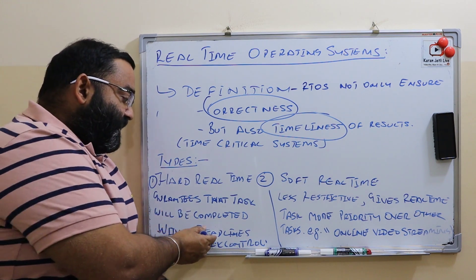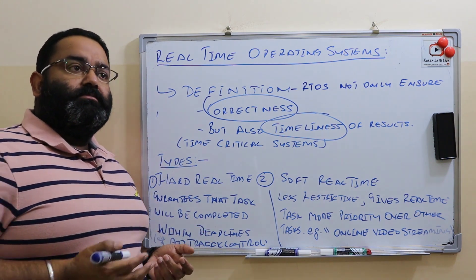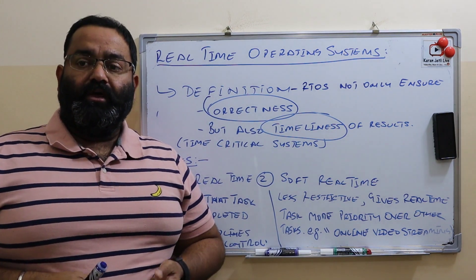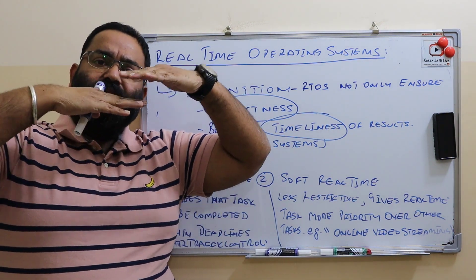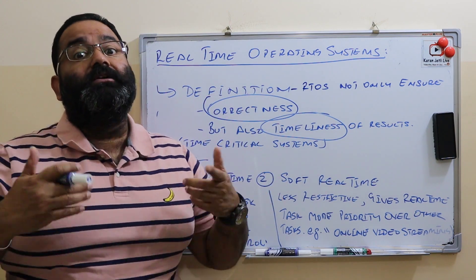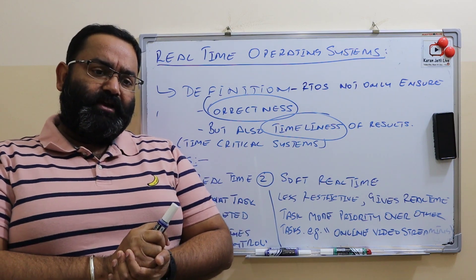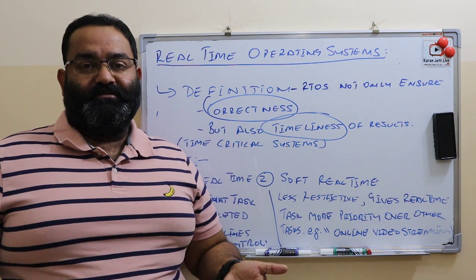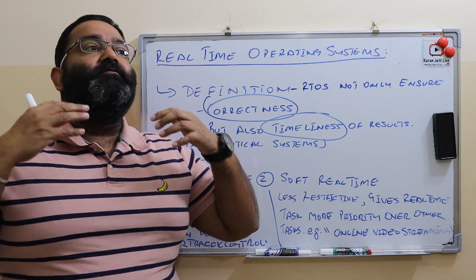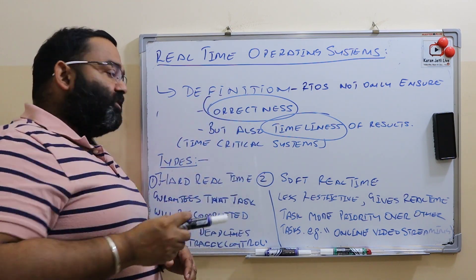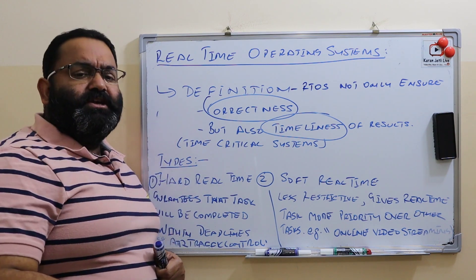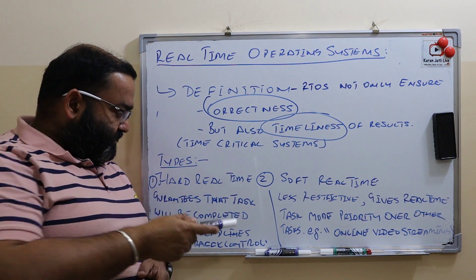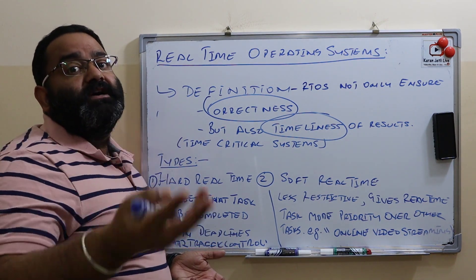An example of a hard real-time system is air traffic control. In air traffic control, we control air traffic using computerized algorithms. In such systems where many lives are dependent on the system, we cannot afford a delay — the system must respond in a fixed period of time. If it does not, we can lose lives or there can be a disaster. So we call such systems hard real-time, where we must guarantee the task will be completed within a deadline.